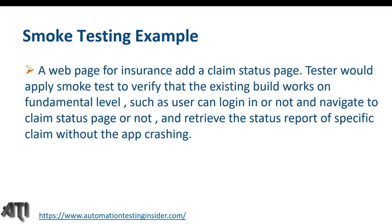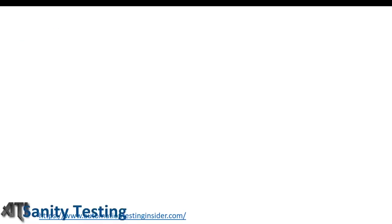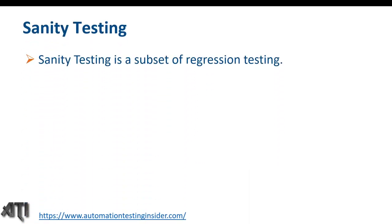An example in software testing: for an insurance website with a claim status page, the tester applies smoke testing to verify that the build works at a fundamental level — such as whether the user can log in, navigate to the claim status page, and retrieve the status report of a specific claim without the app crashing.